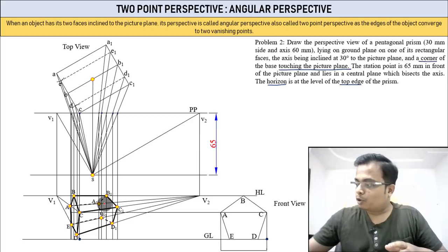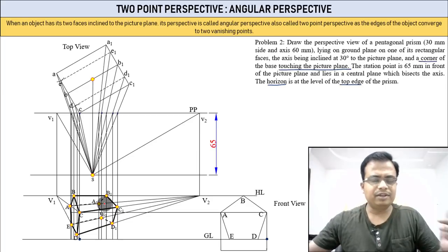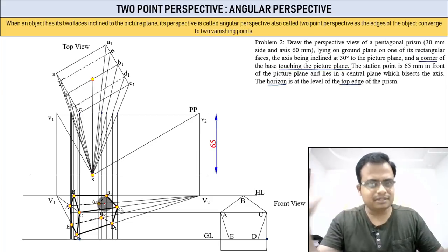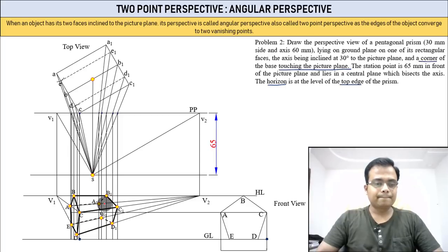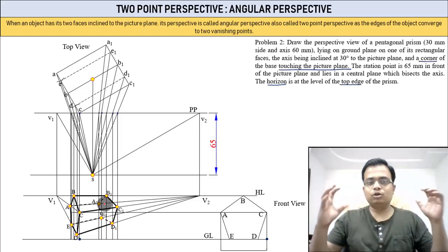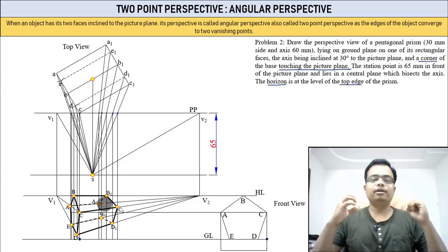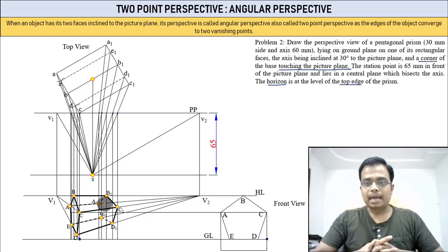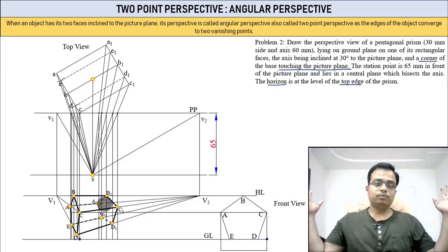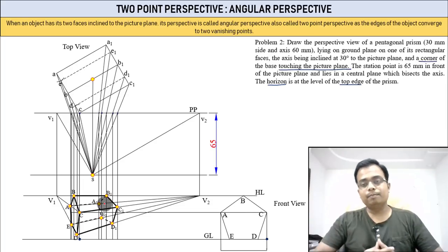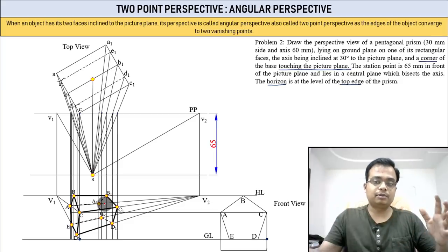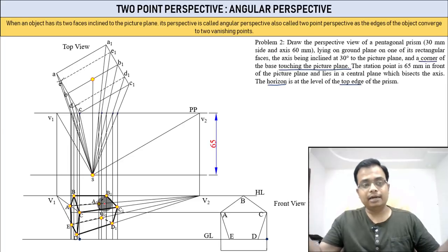The pentagonal prism was a slightly trickier problem. The rectangular block with three cases was easier because the object was simpler to deal with. After watching these two examples, I'm very confident that you now have a strong grasp and can solve any similar problem with ease.